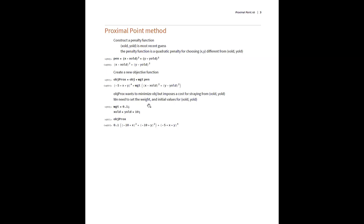We put the weight at 0.1 and let the initial guesses for x and y be 10. This is the proximal point objective. Why would you do that? Because the proximal point objective has a globally unique solution — it does not have the problem of a flat bottom. The Hessian of this is globally positive definite, so this is a numerically stable formulation. Any solver should be able to solve this if the identification issue was the only problem.